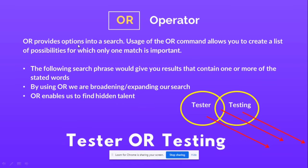The next operator is OR. If you use OR between two keywords, like 'tester OR testing', you are asking the database to search for candidates who include either or both of those terms. This broadens or expands your search and helps you find hidden talent, because some resumes may use 'tester' and others 'testing'. Always use OR to broaden your search and get more profiles.